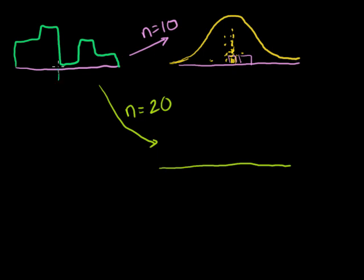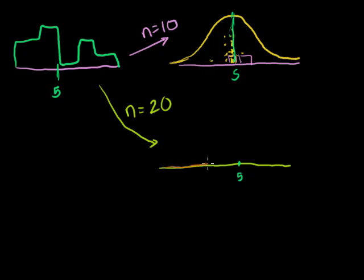They're all going to have the same mean. Let's say the mean here is 5. Then the mean of our sampling distribution of the sample mean is also going to be 5, and it doesn't matter what our n is. But our standard deviation is going to be less. It's going to be more normal but with a tighter standard deviation.